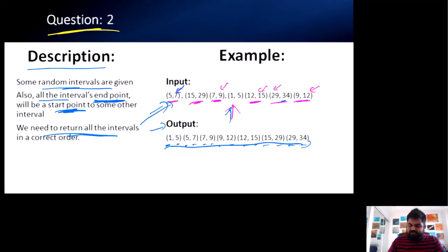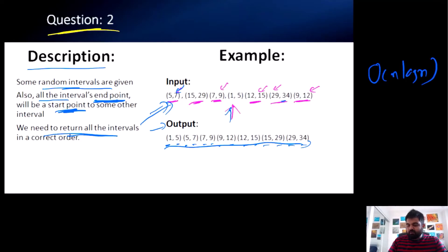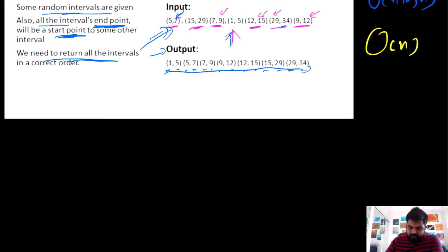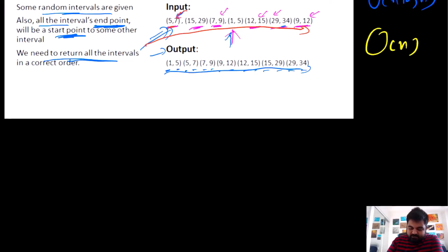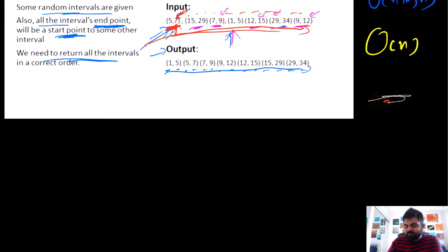The first thing that comes to mind is to sort the input, which would work but takes O(N log N) time. We wanted to solve this in O(N). For this problem, at every moment we need to quickly look up: what is the ending point of one interval and what is the starting point of the next? If we search naively through the input, that's O(N) per lookup — O(N²) overall. Our aim is O(N).